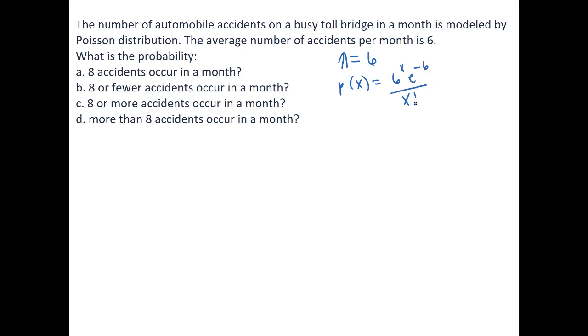Now we can easily calculate probabilities. The first question asks what is the probability that 8 accidents occur in a month? That means what is the probability that x is exactly equal to 8? This is simply equal to 6 to the 8 e to the negative 6 over 8 factorial. We could easily calculate this using just a simple calculator. This is equal to 0.1033.